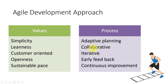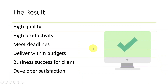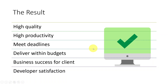So we discussed the nature of software and the software development field, then the challenges, and finally the approaches and techniques we use — the engineering approach, project management, and agile development. The end result is high-quality software with high productivity, meeting deadlines and budget, with the customer achieving business success. Software developers are also highly satisfied, working at a sustainable pace while getting many challenges and opportunities to build their careers.